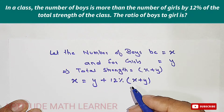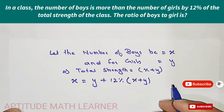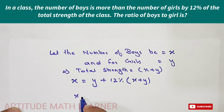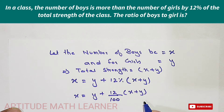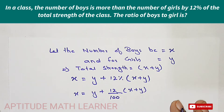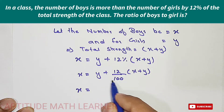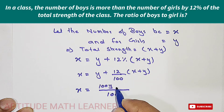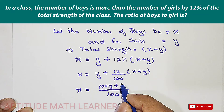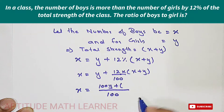So the equation becomes: x = y + (12/100) × (x + y). To clear the fraction, we multiply through by 100, giving us 100x = 100y + 12(x + y), which expands to 100y + 12x + 12y.